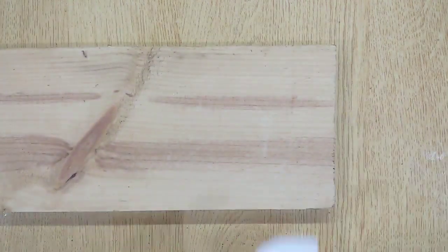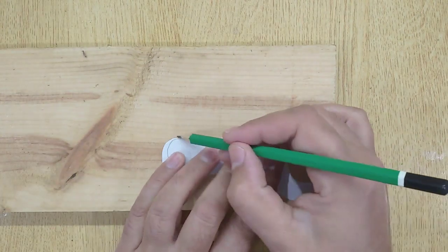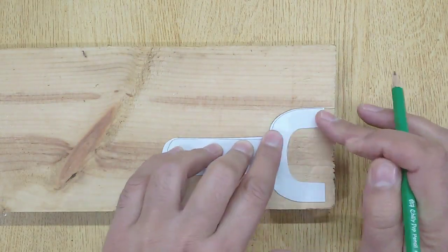Now get a piece of wooden plank and put the paper slingshot design on it and transfer the design on the wooden plank.